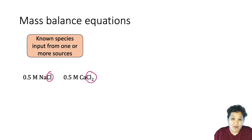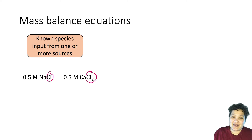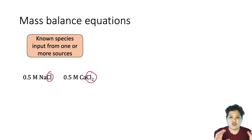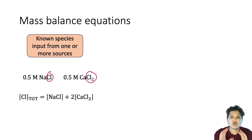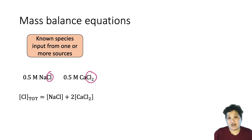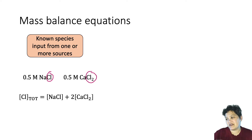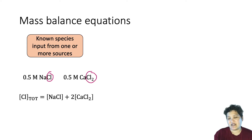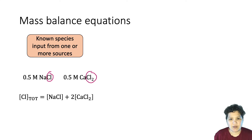You have 0.5 molar chloride from NaCl and one molar from calcium chloride — it's half a molar of calcium chloride, but there are two chloride ions in every calcium chloride formula unit, so we double it. The total chloride input is the concentration of NaCl added plus twice the concentration of CaCl₂, because there are two chlorides in every molecule of calcium chloride.